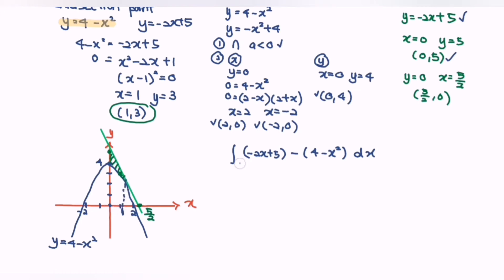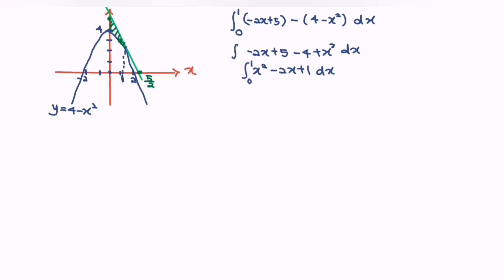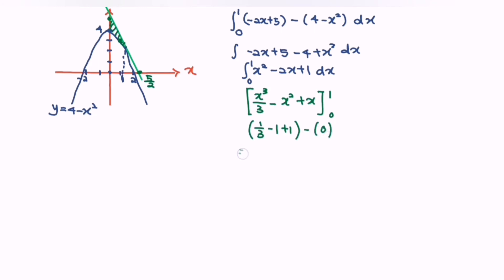To find the region bounded by the graphs and the y-axis, we integrate (negative 2x plus 5) minus (4 minus x squared) with respect to x from 0 to 1. Expanding: integrate (x squared minus 2x plus 1) dx from 0 to 1. Integrating gives [x³/3 minus x² plus x] evaluated from 0 to 1. Substituting: (1/3 minus 1 plus 1) minus 0 equals 1/3. The area is 1/3 square units.